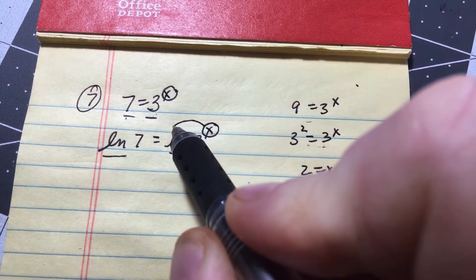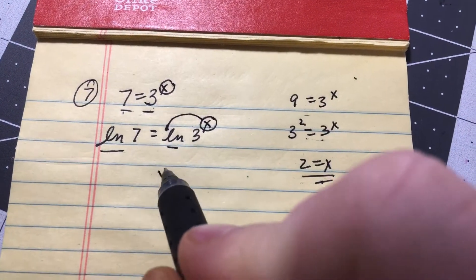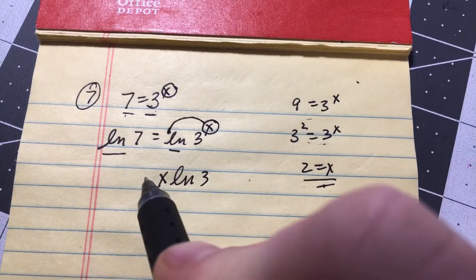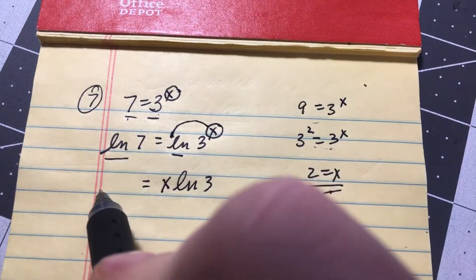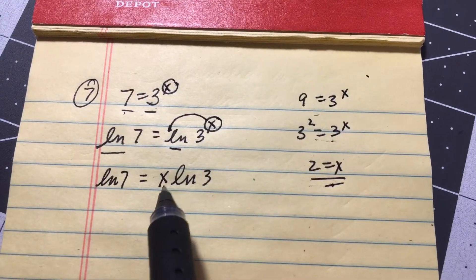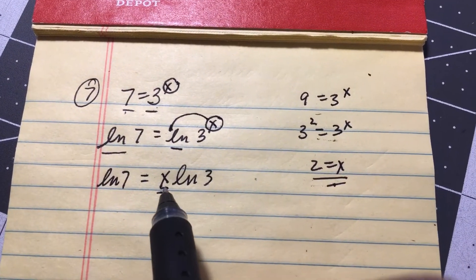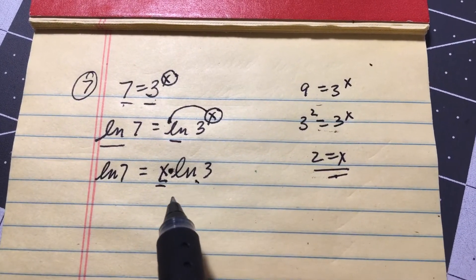property that says we can take this exponent and move it down in front of that logarithm, like that, right there. Okay, so now it's on the ground, I always say. And now you're multiplying that by the natural log...